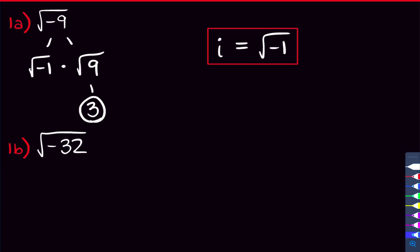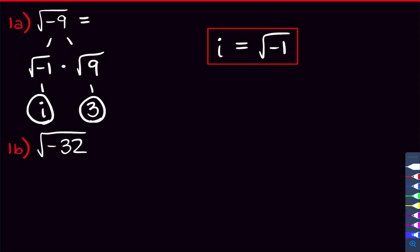So, i is defined as the square root of negative 1. That means this square root of negative 1 here gets written as i, and so the square root of negative 9 is just 3 times i. We write it as 3i, and that's the answer for problem 1a.